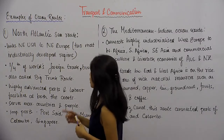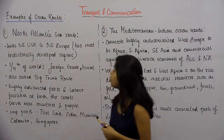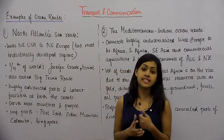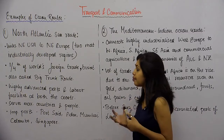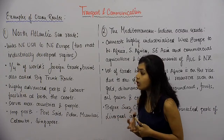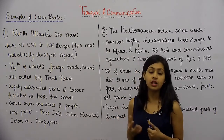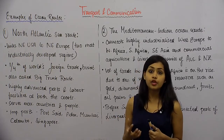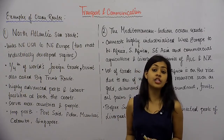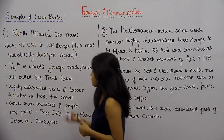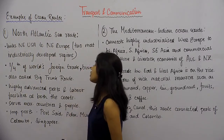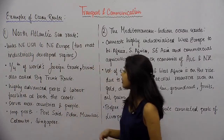It is also called the Big Trunk Route because of the excessive amount of trade that happens and because of its importance as a trading route. So the sea route is also called the Big Trunk Route.